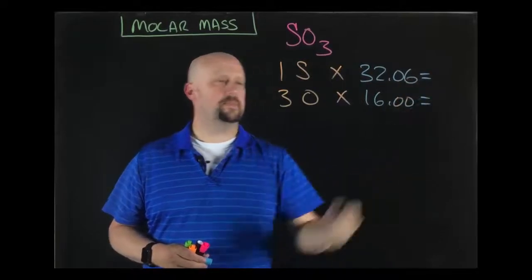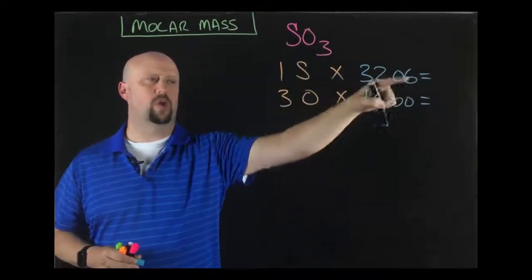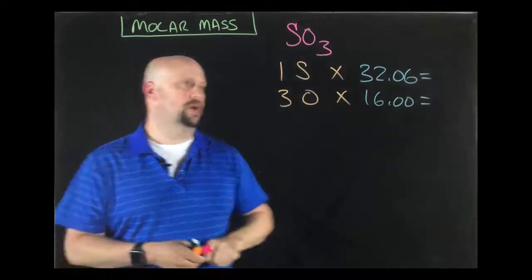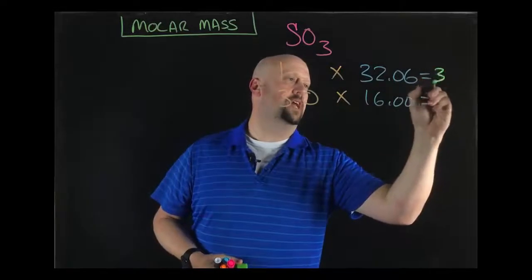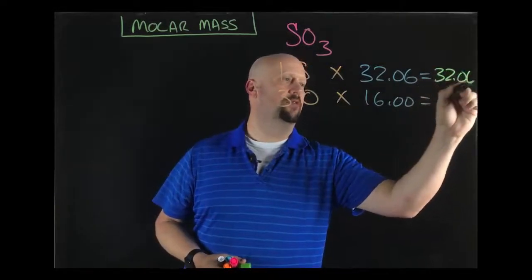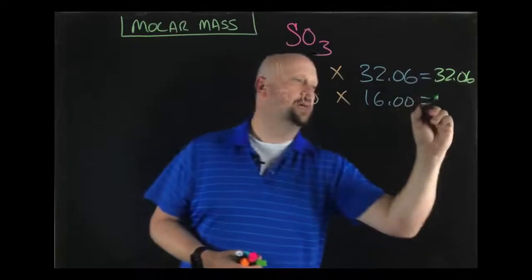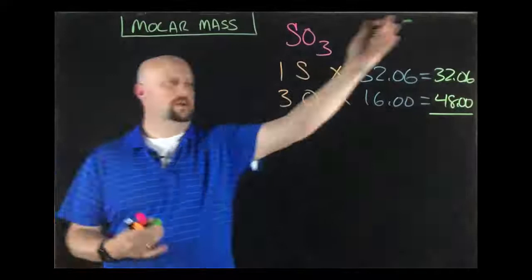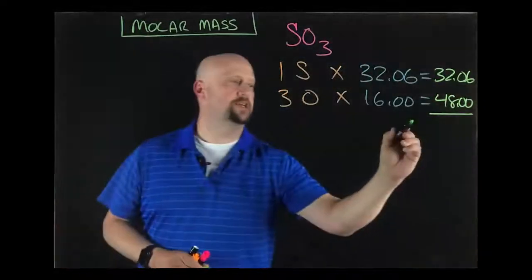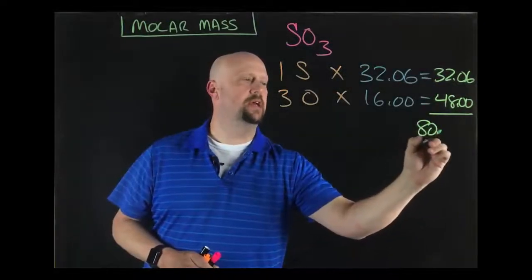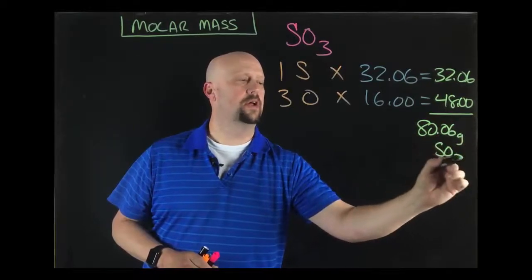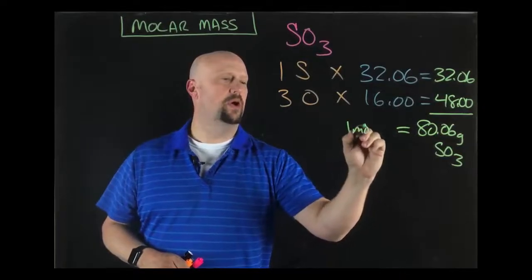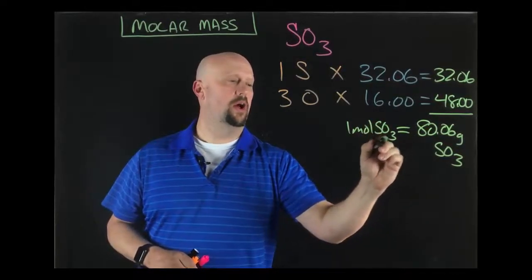Then what you're going to do is you're going to multiply across. I've got one of these, I've got three of these, so I'm going to multiply those across. Obviously anything times one is itself, and then three times 16 is going to give me 48. Then you're going to come down and add them up together, and so that's going to give me 80.06 grams of sulfur trioxide, SO3, and that is going to be equal to one mole of SO3.